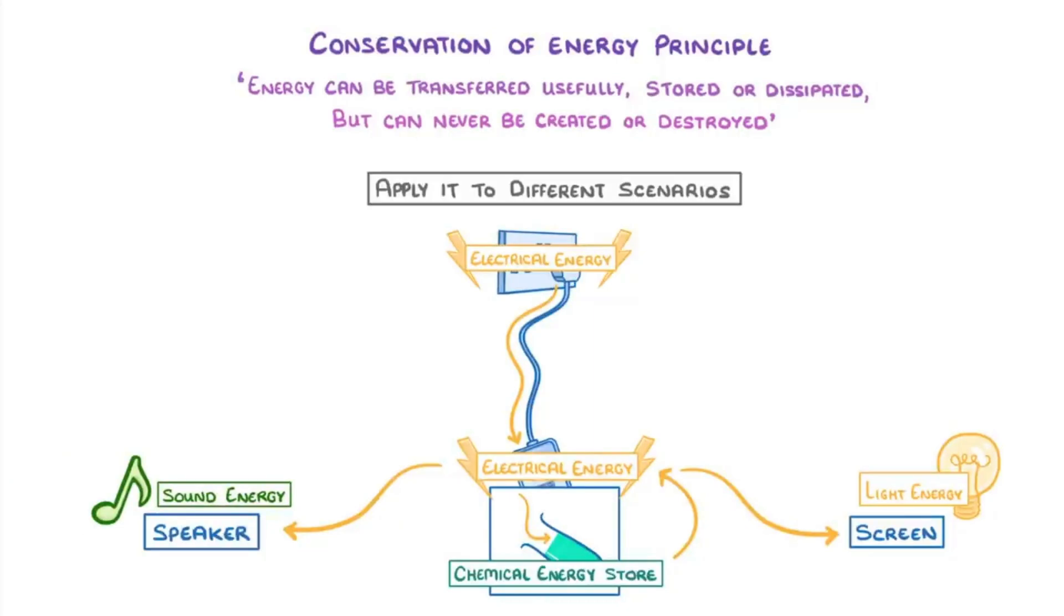Ideally, every time that energy is transferred, it would all be transferred usefully into the desired store that you want it to go to. In reality, though, some of it is going to be dissipated as wasted energy, which just means to forms other than the one that we intended.